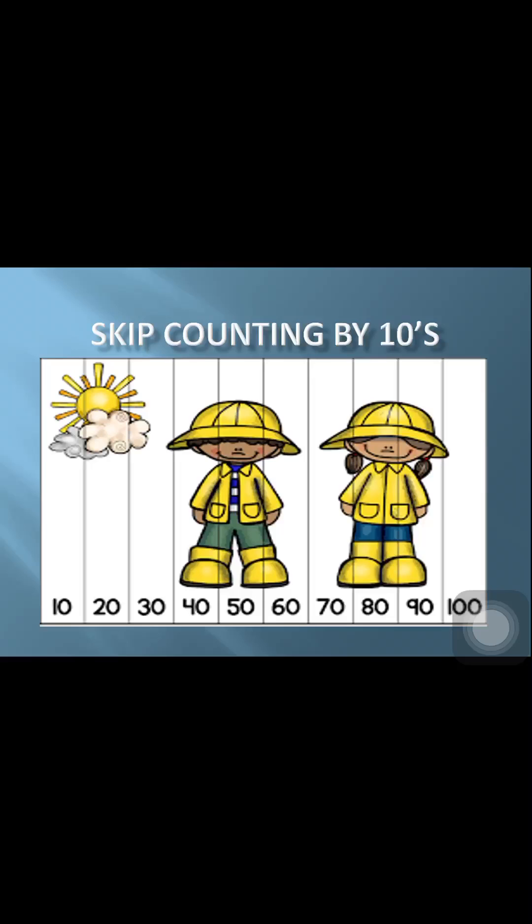How are you, my kids? I hope you are fine and in good health. Before, in our math lessons, we took skip counting by two and skip counting by five. Skip counting by five means that we count one number and leave the other, like zero, two, four, six, eight, ten. If we want to count by five, we say zero, five, ten, fifteen, twenty. Counting by two means we count one and leave one; count by five means we add five each time.